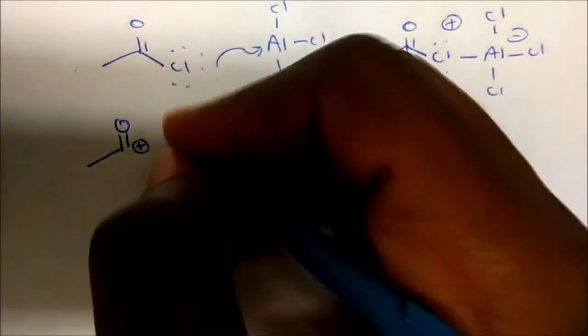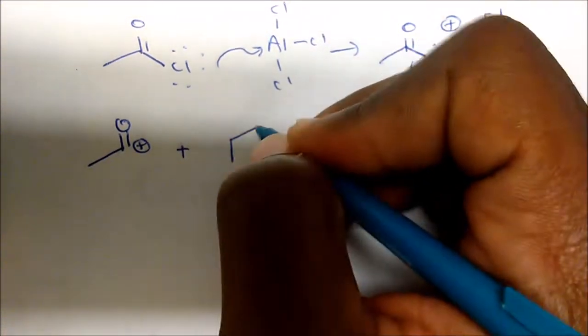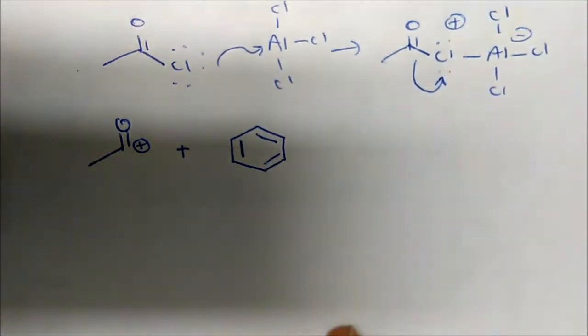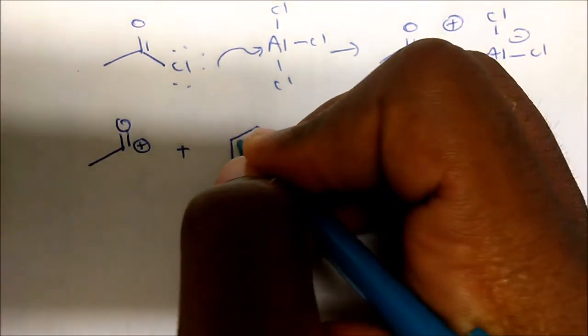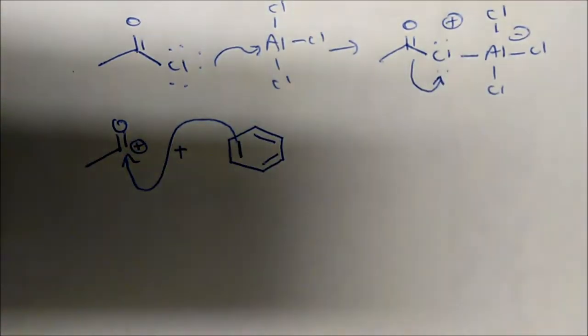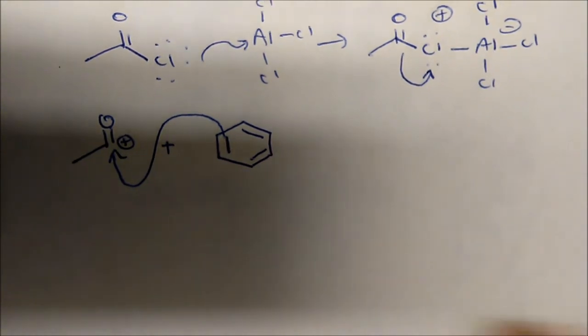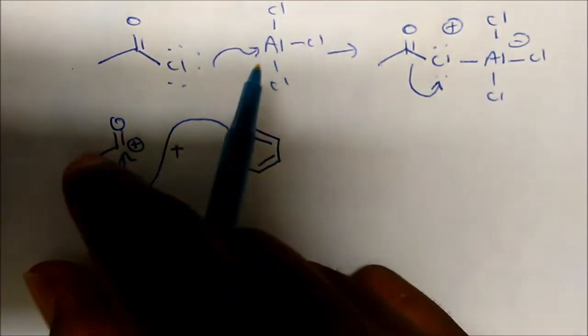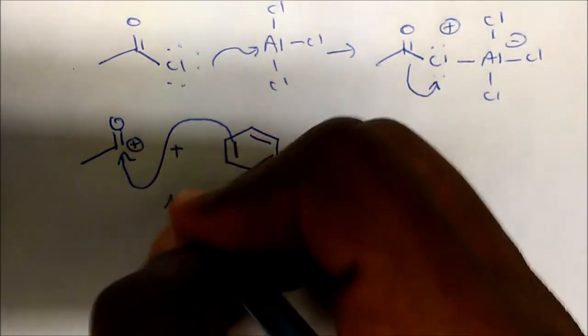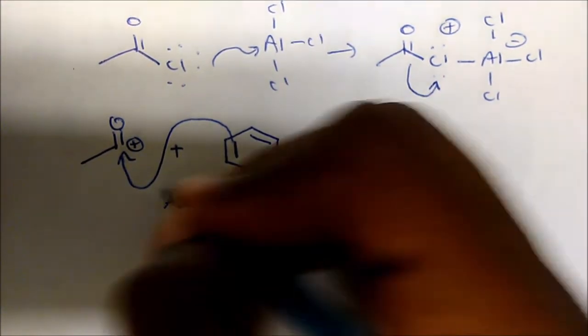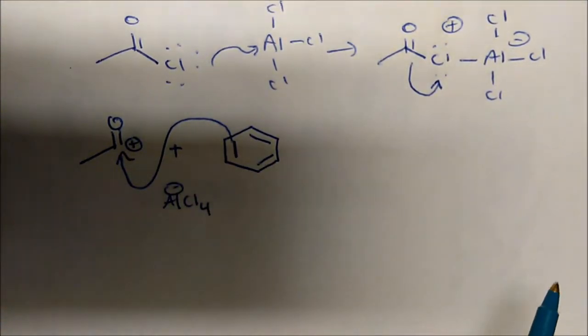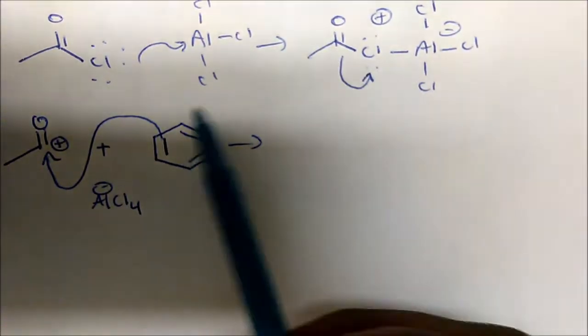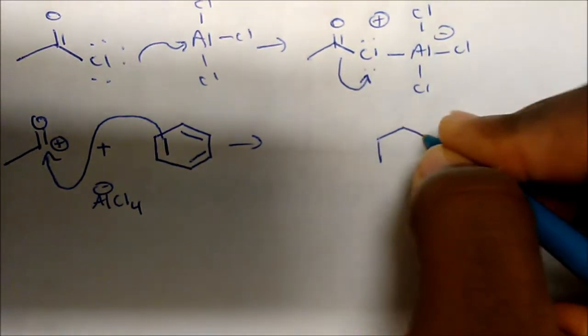Once my carbocation is formed, benzene actually comes in with one of its pi electrons and attacks the carbocation. Important to point out: I'm conserving charge, so I have a plus charge here, but remember in solution we also form AlCl4 minus.